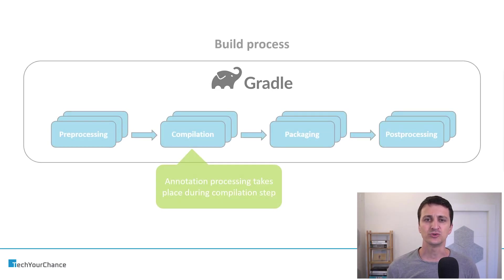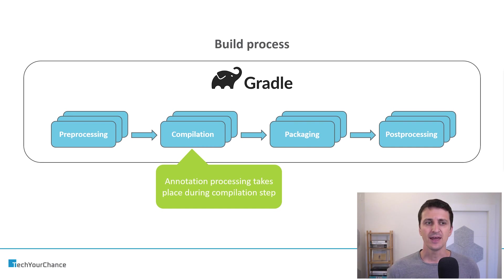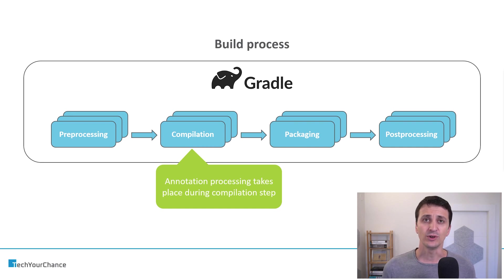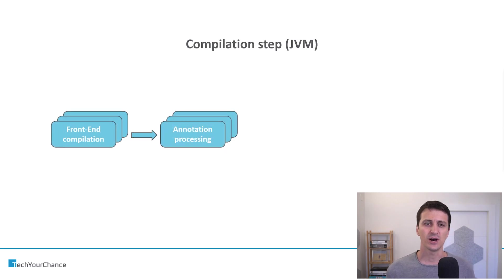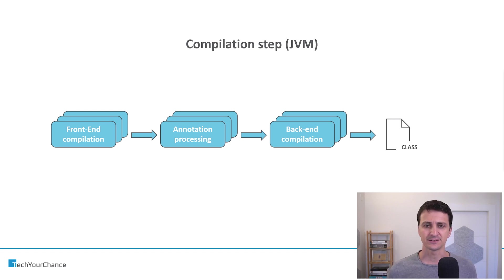Let's remind you at a very high level what Java annotation processing is and where it comes into the picture. Currently on screen you can see the build process using the Gradle build system, which consists of several large steps, one of which is compilation. Java annotation processing takes place during this compilation step. It starts with front-end compilation, then proceeds to annotation processing, and the output from annotation processing goes to back-end compilation, and lastly we generate bytecode inside class files.